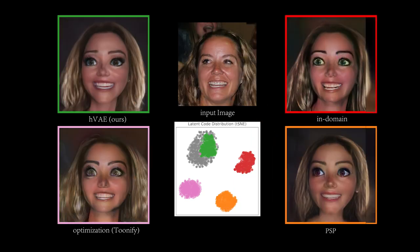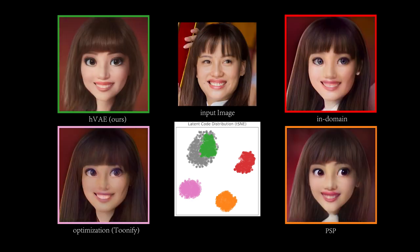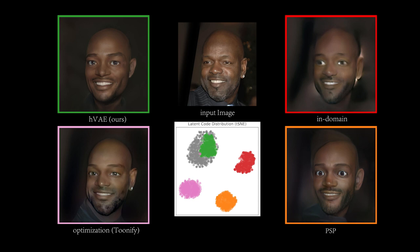What we discover is that if we learn a mapping which tries to match the latent Gaussian distribution of the original StyleGAN2, the mapping works much better for a wide range of style generators.